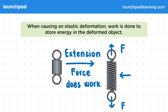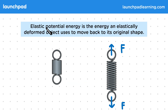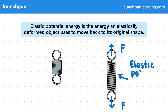The work done gives energy to the spring, so energy is stored within the spring. But what type of energy is stored? Elastic potential energy is the energy an elastically deformed object uses to move back to its original shape. So in an elastic deformation, all of the work stores energy as elastic potential energy.